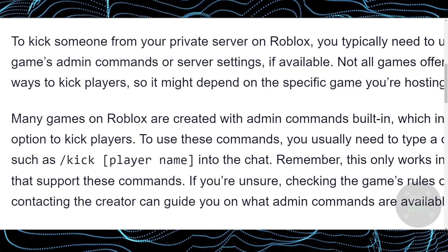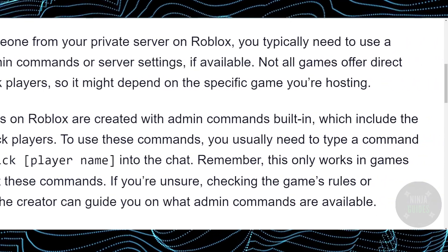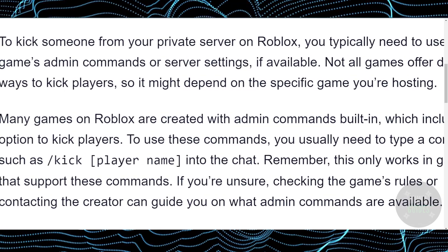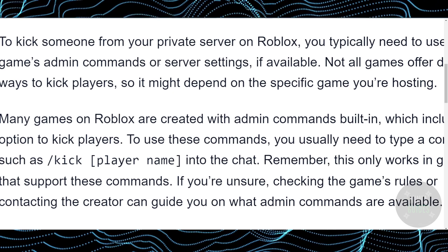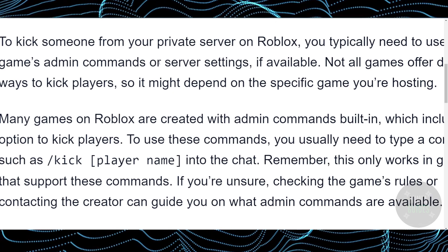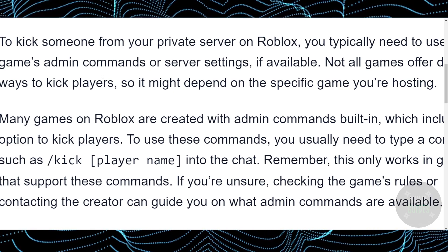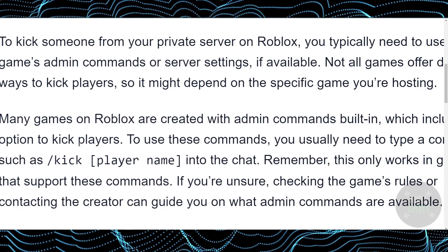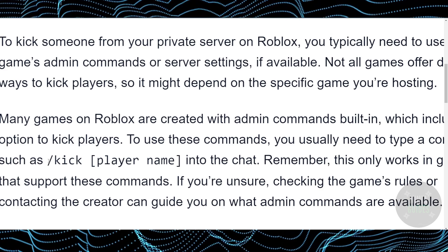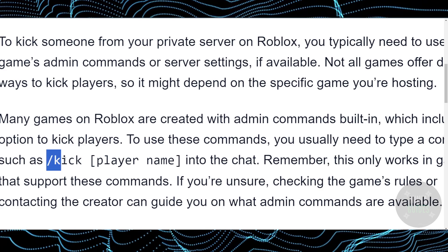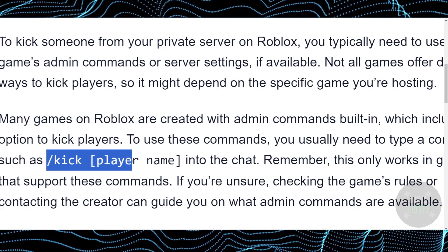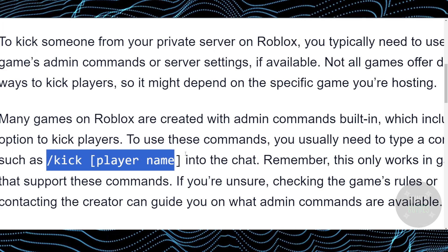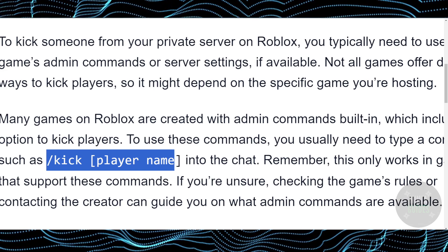To put the command in, you just have to press the console key, which is right underneath the escape key on your keyboard. Once the console bar is opened up, you just have to type the command: slash kick, then a space, then the player name.